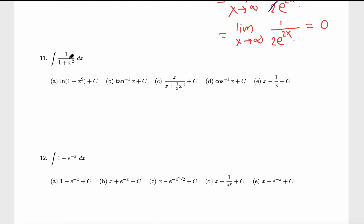Number 11: 1 over 1 plus x squared. You cannot separate this fraction into 2 fractions, and there is no quotient rule. By the way, if you recall correctly, derivative of tangent inverse x is 1 over 1 plus x squared. So anti-derivative of 1 over 1 plus x squared is just tangent inverse x.